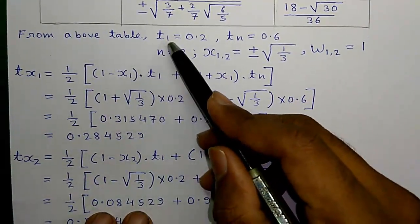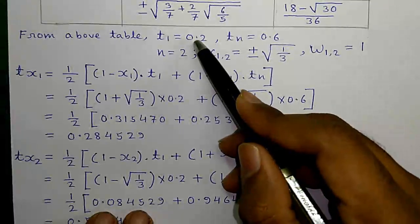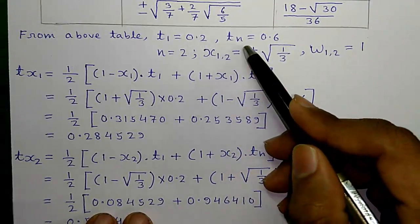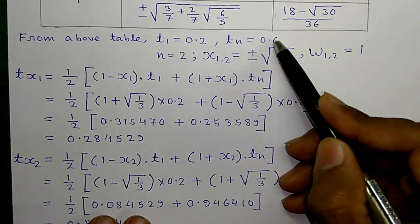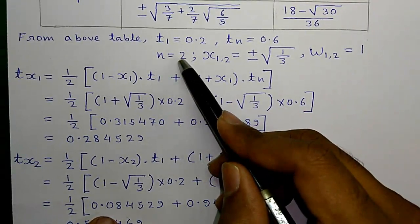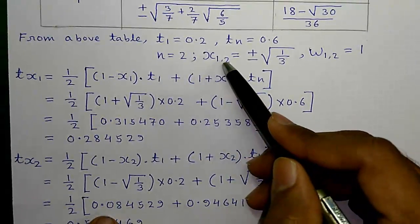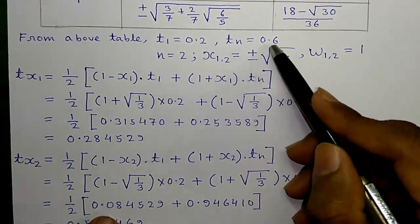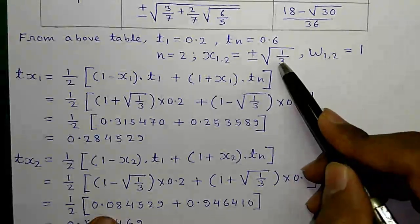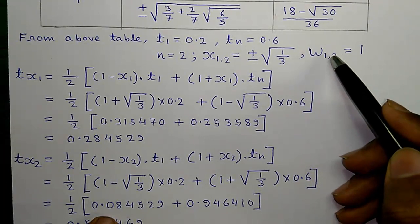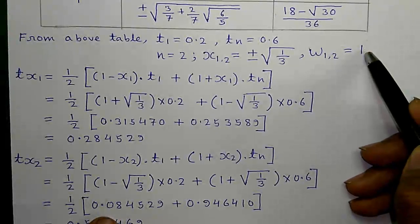So, from above table, T1, which is the lower limit is equals to 0.2. Tn, which is the upper limit equals to 0.6. n on number of points equals to 2 since it is a two-point formula. And x of 1 comma 2 equals to plus or minus root over 1 by 3. And w or weight of 1 comma 2 equals to 1.